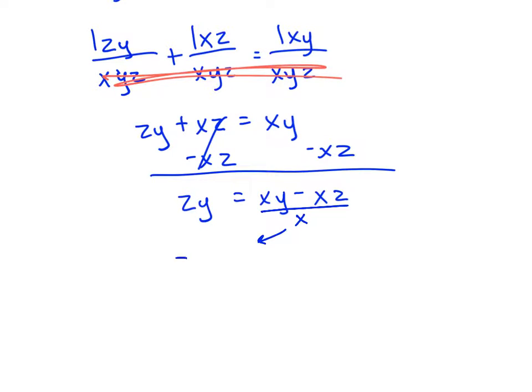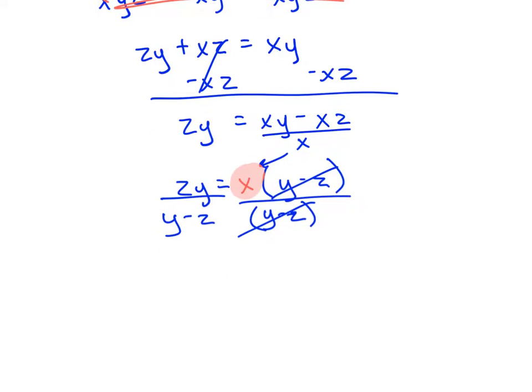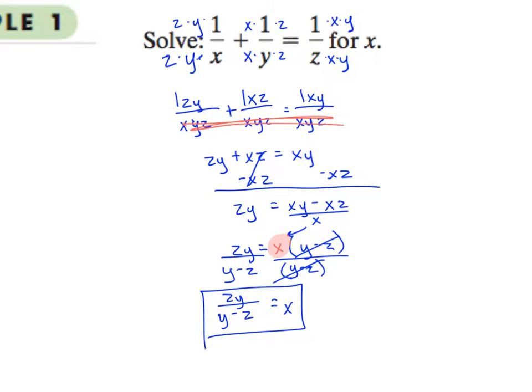xy is not like terms with xz. But I could factor out x from each of those terms. Not to get rid of it totally, but to separate it from those two terms. If I factor it out, it disappears from both of those terms. And look, now it's only here one time. And if x is occurring in an equation one time, then I can get everything else away from it. So I can divide now. I can divide y minus z away to get it away from the x. And so x ends up being zy over y minus z. And that is how I get x alone.